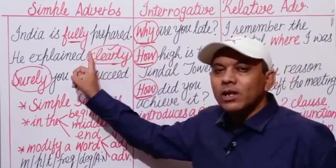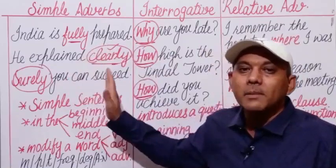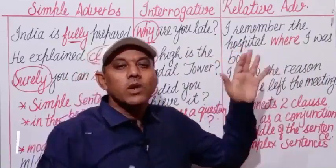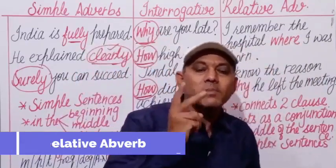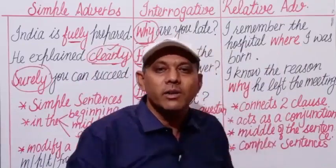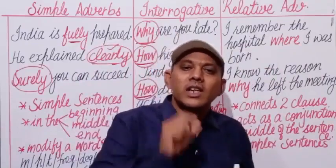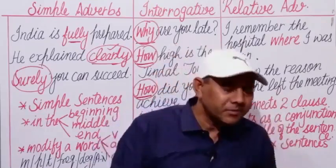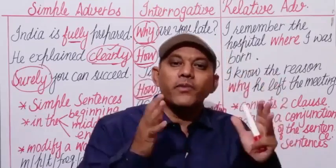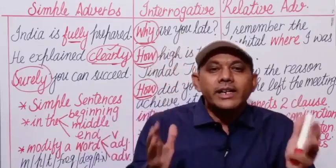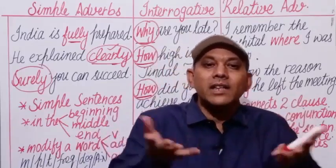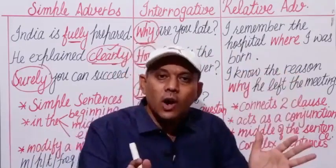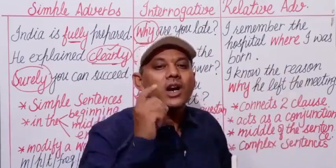While simple adverbs can be used at the beginning, in the middle, and at the end of a sentence, interrogative adverbs introduce questions and are usually used at the beginning of sentences. Now let us come to relative adverbs. There is a slight difference between conjunctive adverbs and relative adverbs: when an antecedent is given before the adverb, it is known as a relative adverb. When there is no antecedent and the adverb is used as a conjunction only, it is a conjunctive adverb.